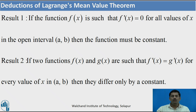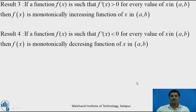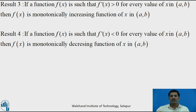Next deduction: if two functions f(x) and g(x) are such that the derivatives of these functions are equal at each and every point of the open interval (a, b), then these two functions differ by only a constant. Next deduction: if a function f(x) is such that f'(x) > 0 throughout the interval (a, b), then f(x) is a monotonically increasing function in the open interval (a, b).